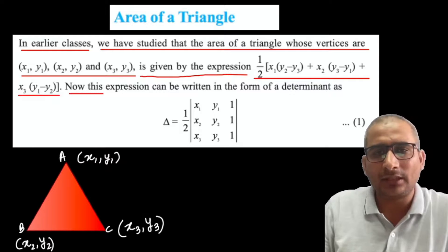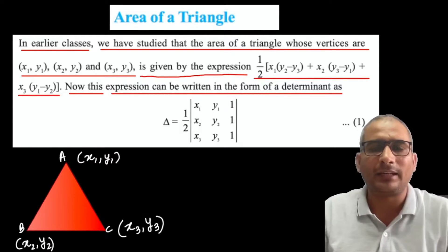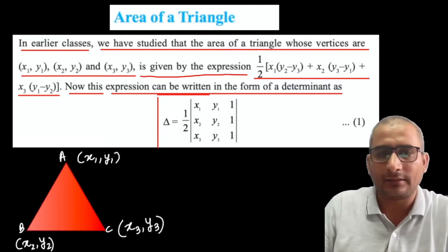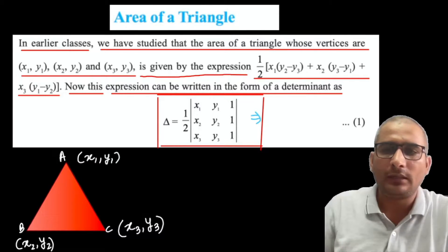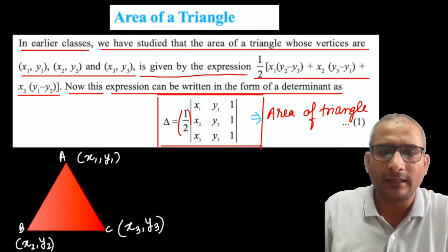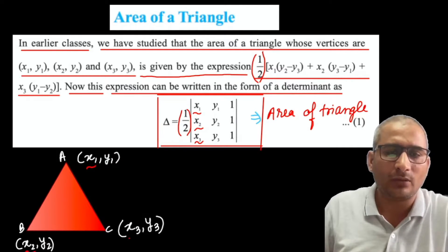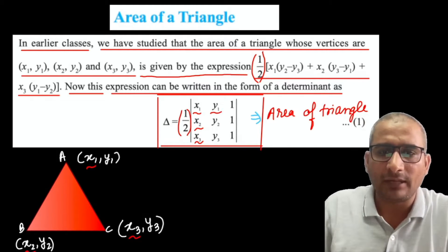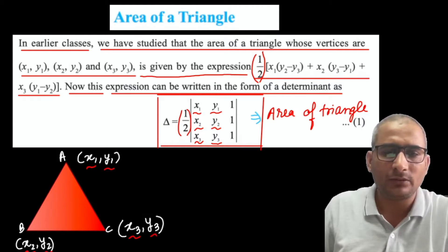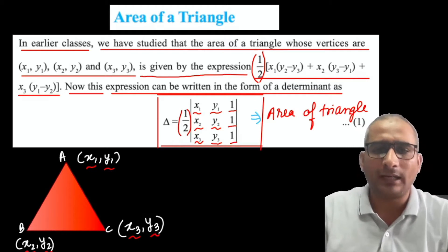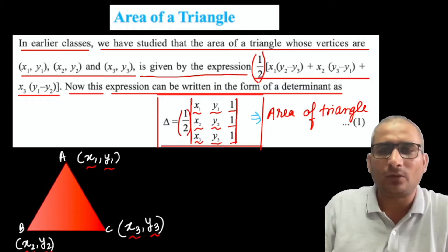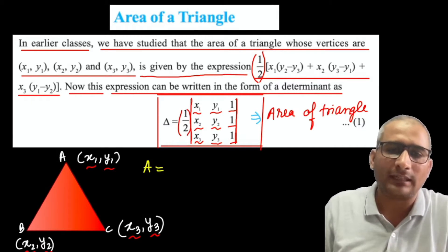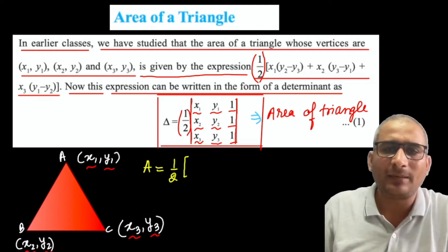I hope you remember this formula. Now this expression can be reduced into the form of a determinant. This is equal to the area of triangle. So this is the reduced formula for area — the class 10 formula has been reduced into determinant form. We know how to expand the determinant, so let us expand it along column 1.